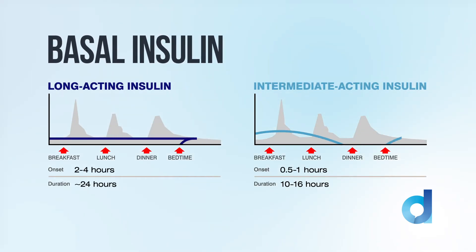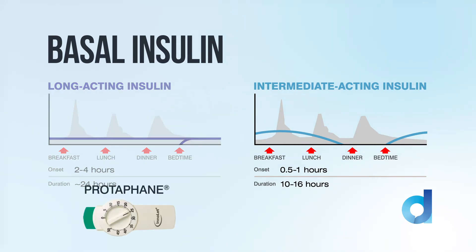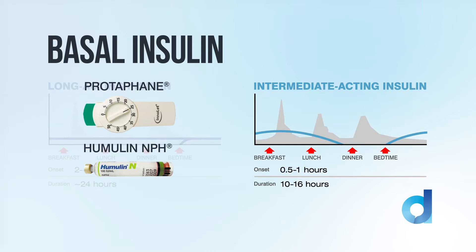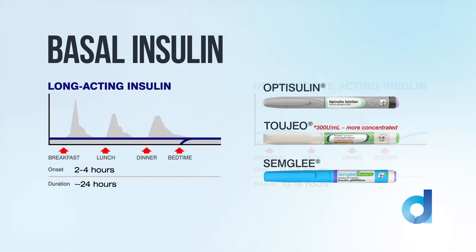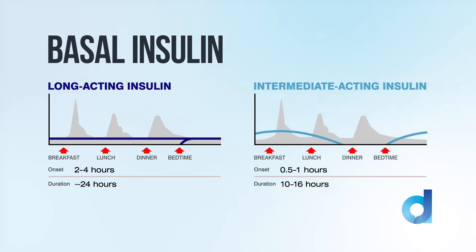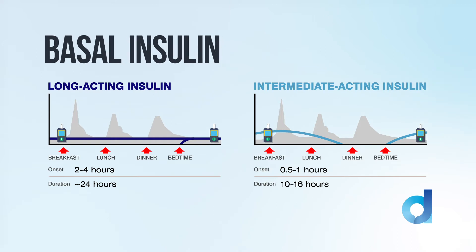First, there are basal insulins. These are designed to give background insulin cover throughout the day and night, and to control fasting glucose levels or the levels between meals. Basal insulins can be intermediate acting or long acting. They should be given at regular times once or twice a day, regardless of meal times. You can check the effectiveness of a basal insulin by doing a fasting blood glucose level before breakfast or overnight around 2 or 3 a.m.